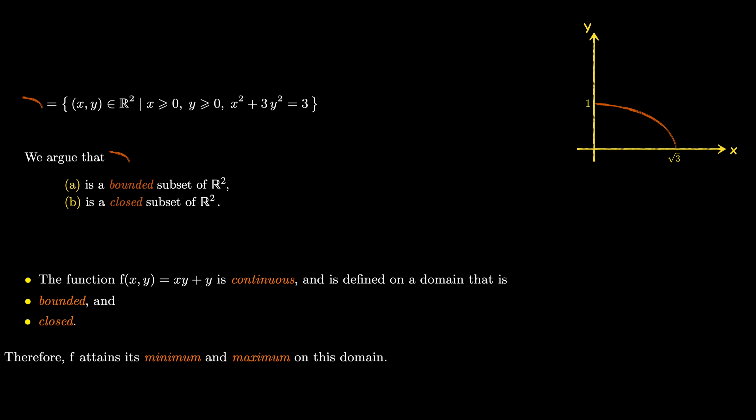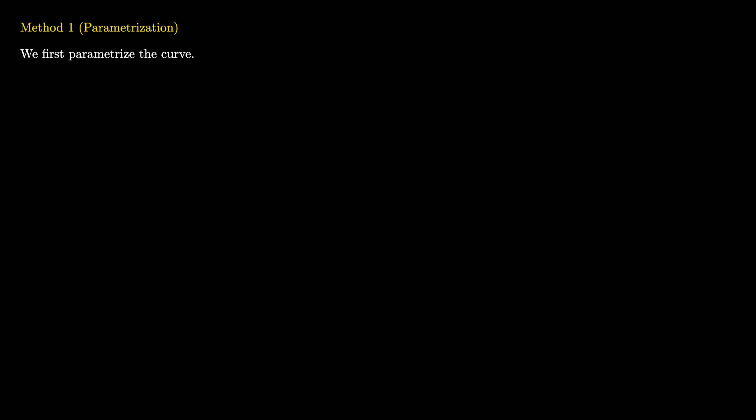Now for the second part of the problem, I want to use two different methods. The first method is the method of parametrization. I first parametrize the given curve. Because this is an ellipse, there is a standard parametrization. I standardize the equation by dividing everything by 3, so it becomes x²/3 + y² = 1. I then write the left-hand side as the sum of two complete squares.